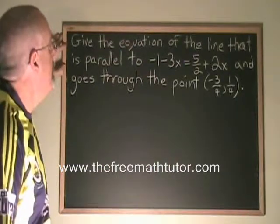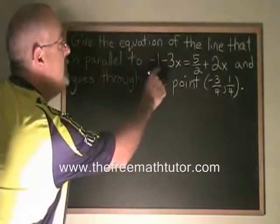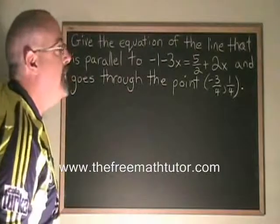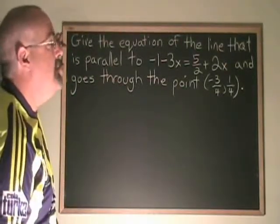In this example, we are asked to give the equation of the line that is parallel to negative 1 minus 3x equals 5 halves plus 2x and goes through the point negative 3 quarters, 1 quarter.